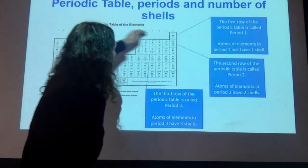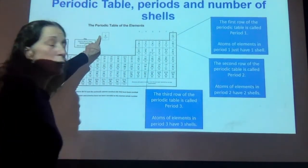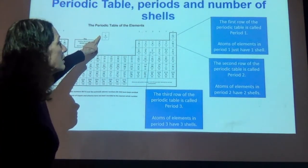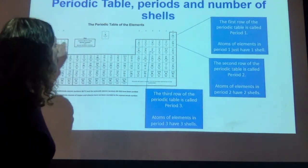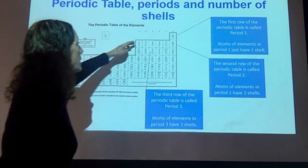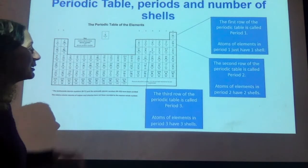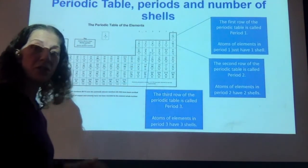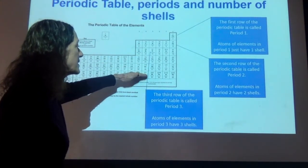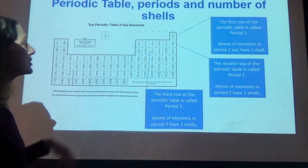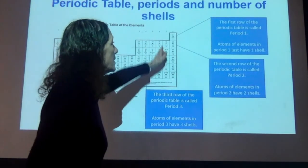The rows are called periods. In the first row there are only two elements, and that's called period one. If an element is in period one, it just has one shell. The second row is period two — all elements in period two have two shells. Period three elements have three shells, and it carries on like that up to period seven. For example, chlorine is in period three, group seven.